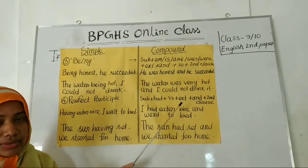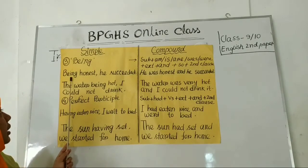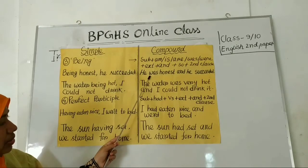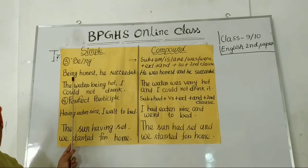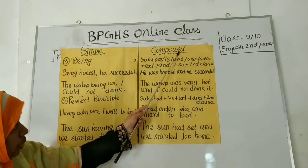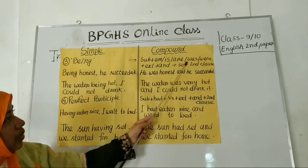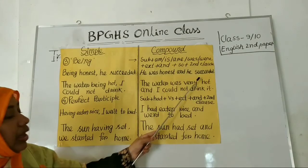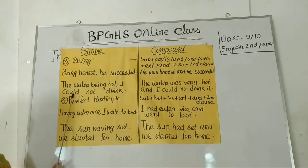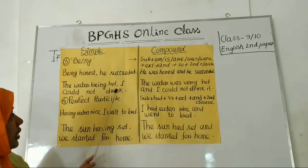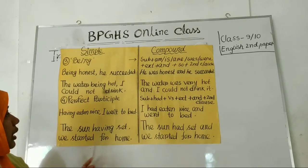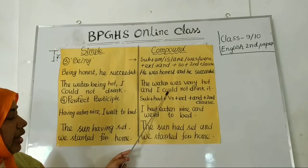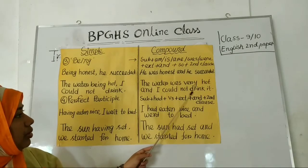Example: 'Being honest, he succeeded.' The phrase 'being honest' should be turned into a clause: 'He was honest.' Because of being, you use was. Result: 'He was honest and so he succeeded.' Another example: 'The water being hot, I could not drink.' Turn the phrase into a clause: 'The water was very hot.' Then: 'The water was very hot and I could not drink it.'